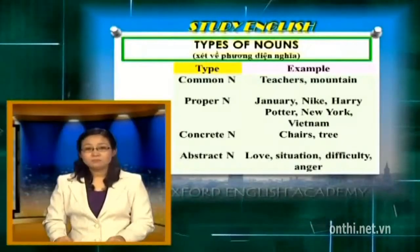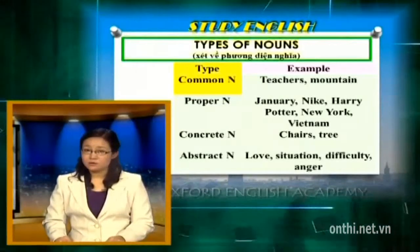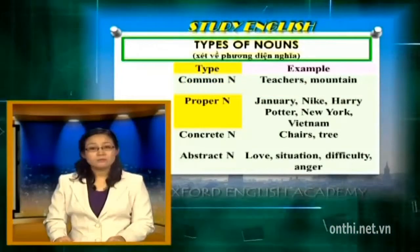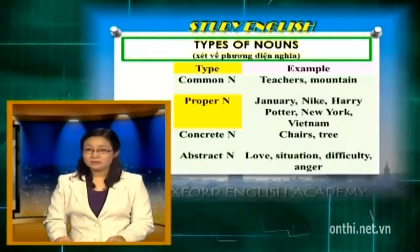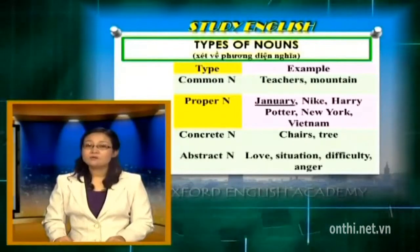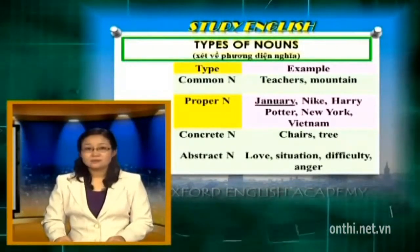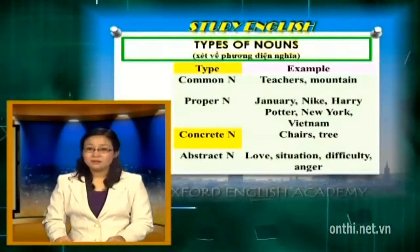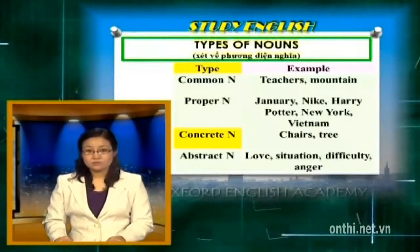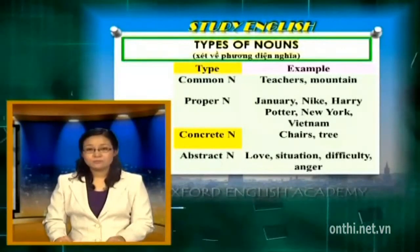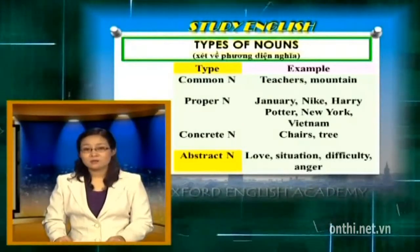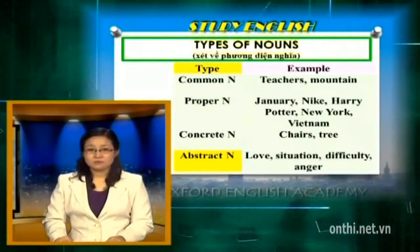Xét trên phương diện nghĩa, danh từ có thể chia làm 4 nhóm: danh từ chung (common nouns) chỉ tên các sự việc, hiện tượng nói chung, ví dụ teacher, mountains. Danh từ riêng (proper nouns) chỉ tên gọi riêng của một sự vật hay hiện tượng cụ thể, ví dụ tên riêng của một công ty, tên của một quốc gia, tên của một người, một địa danh, thương hiệu. Danh từ chỉ vật hay sự vật cụ thể có thể cảm thấy, nhìn thấy, nghe thấy, ngửi thấy (concrete nouns) một cách vật chất, ví dụ chair, tree. Danh từ trừu tượng (abstract nouns) chỉ các sự vật hiện tượng như ý nghĩa, cảm xúc, khái niệm.